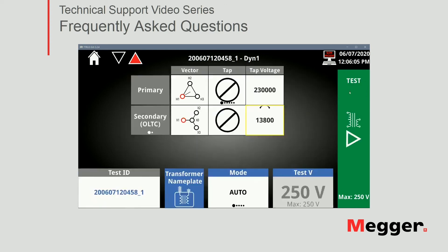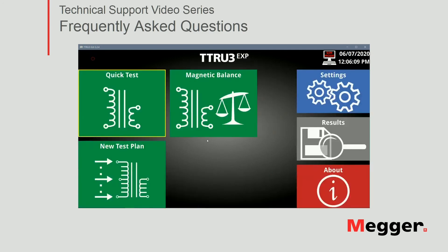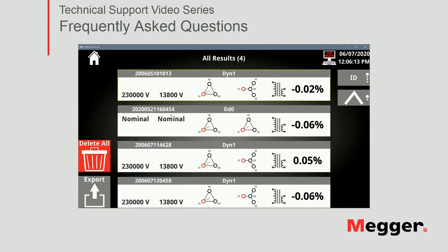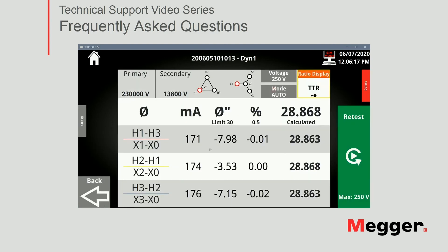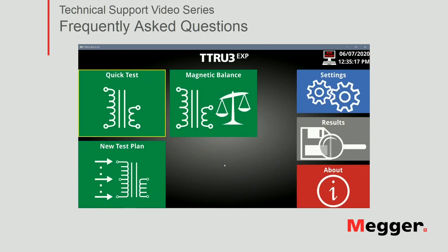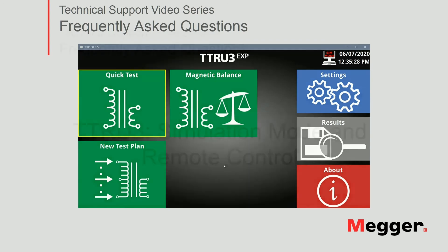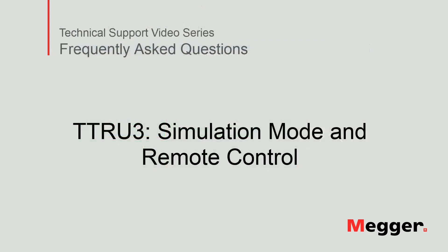You can save the results, then go to the home screen and navigate to Results to review the last test. From there you can retest, delete the record, or export it. Since I'm running the software from my computer, an Excel CSV file will be created and the software will indicate the file path. That covers both simulation mode and remote control. Quick Test and New Test Plan will be covered in separate videos. This concludes the TTRU3 simulation mode and remote control tutorial.